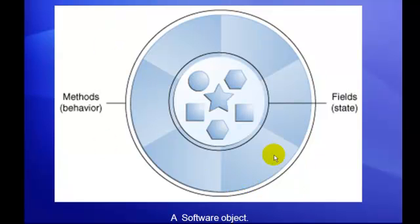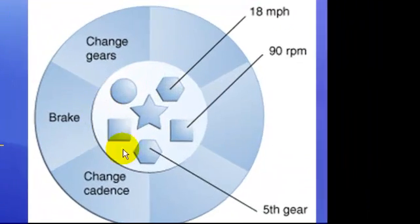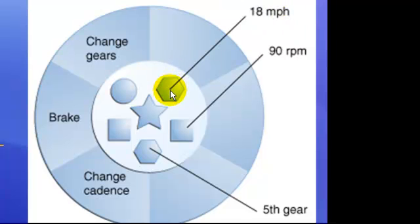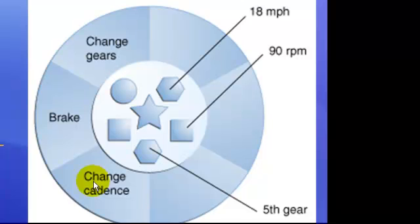Let us understand this with the help of some pictures. The inner circle shows the fields or state of the object, and the outer circle shows the behavior or methods of the object. For example, in the inner circle we have 18 miles per hour — the state of the cycle at a particular instant — 90 rotations per minute, and running in fifth gear. In the outer circle, we can change the gears, apply the brakes or release the brakes — these are the behaviors associated with the bicycle example.